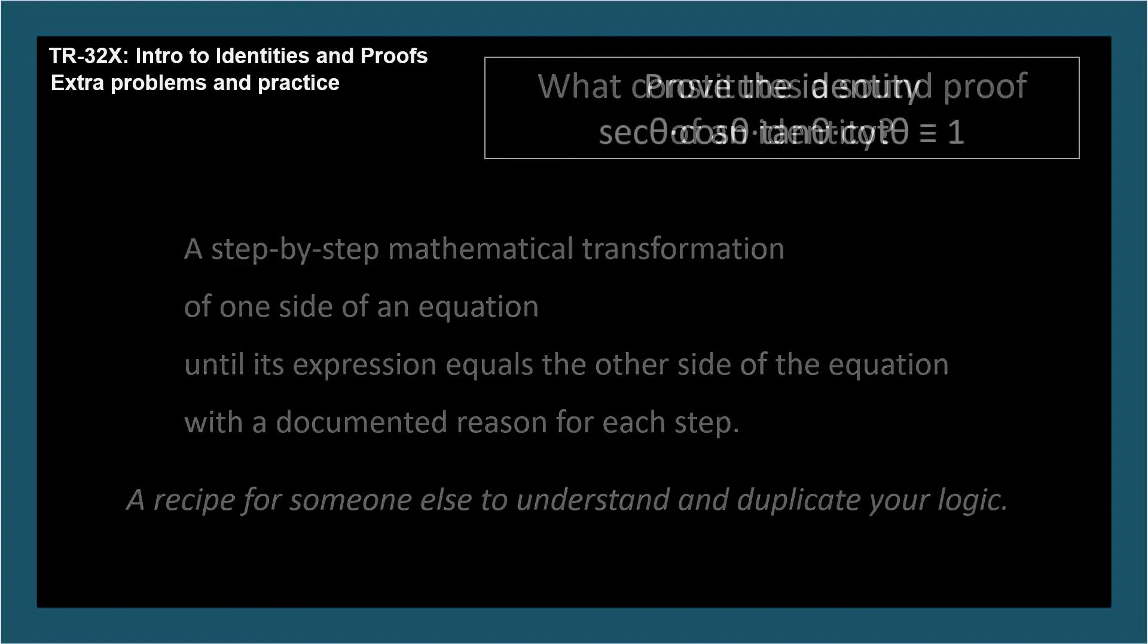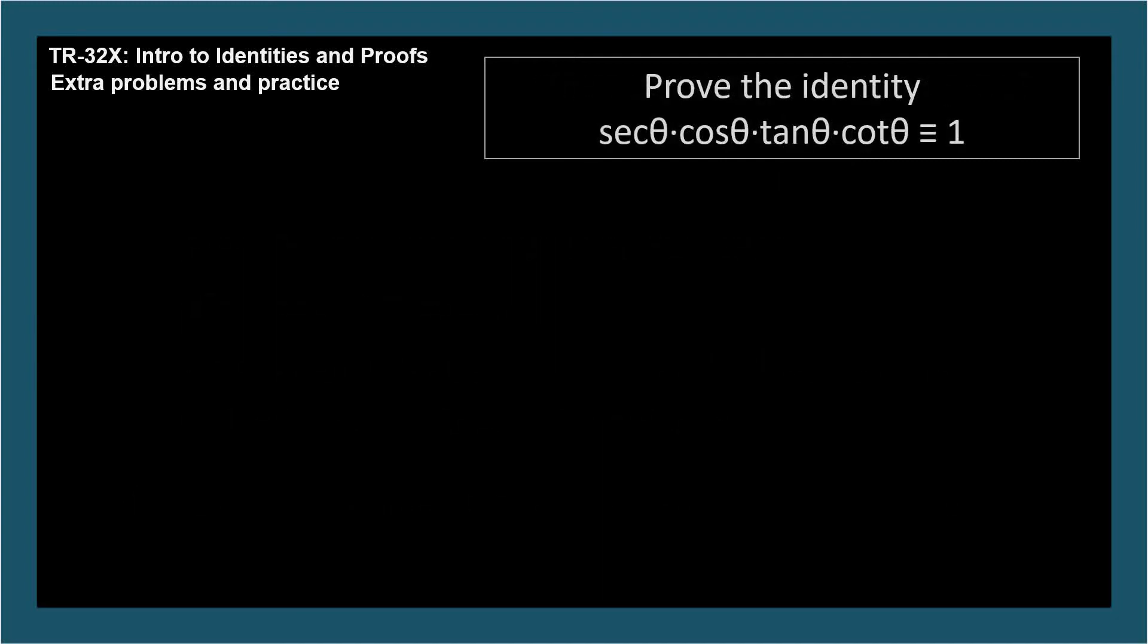Here's another proof. Prove the identity. Secant theta times cosine theta times tangent theta times cotangent theta is 1. Let's start with a nice, organized, two-column grid. We'll put our statements in the left column and the reason for each statement in the right column.